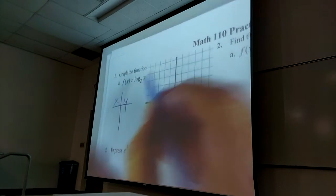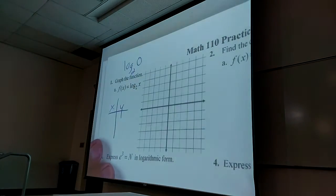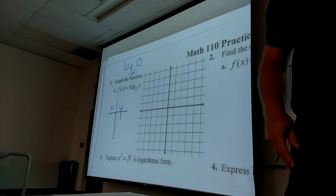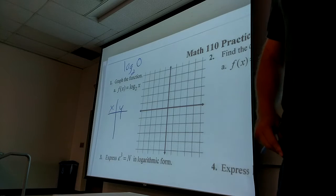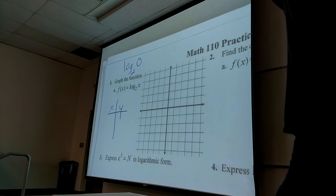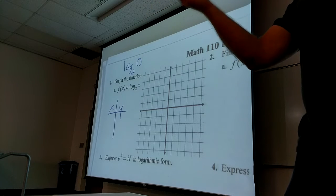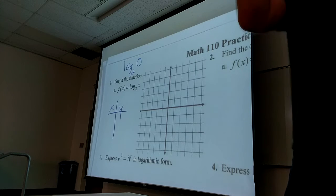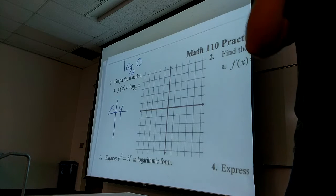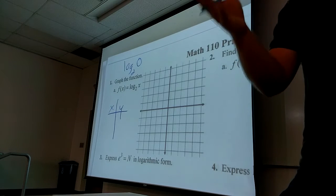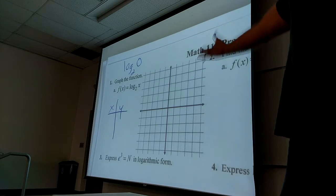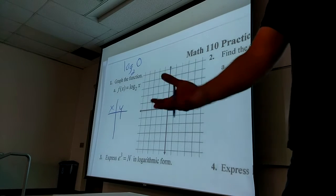If I put zero in there — what's log base two of zero asking me? What power do I raise two to to get zero? If I raise two to the negative five, I get one over two to the fifth. Is that small? Sure. Is it zero? No. If I raise two to the negative five billionth, is that small? Yes. Is it zero? No. It will never get to zero, which is what the graph means — it's asymptotic at zero. So there's no answer to that question. It can't work at zero or negatives.